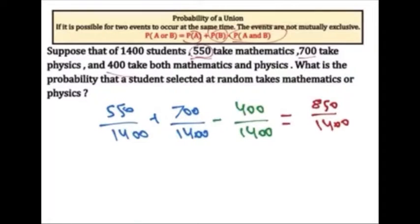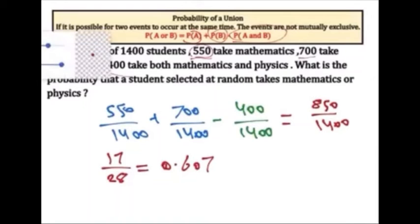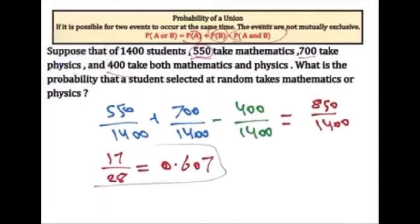If I reduce this fraction, I would get 17 over 28. And if I divide it out, I get 0.607. So this is the final answer for this question.